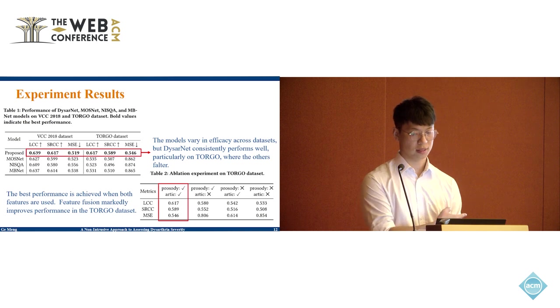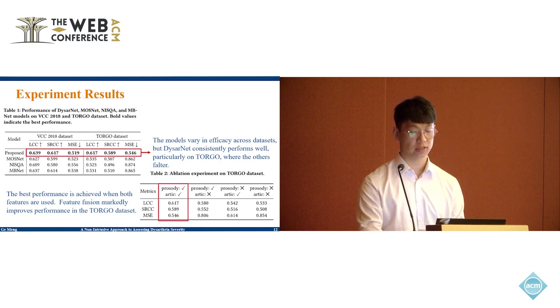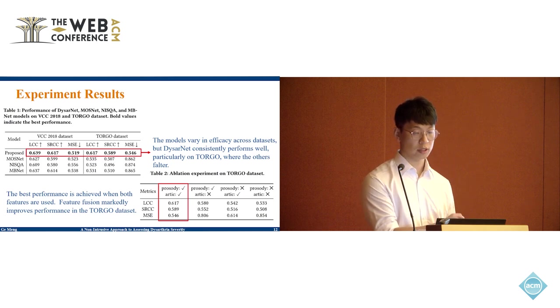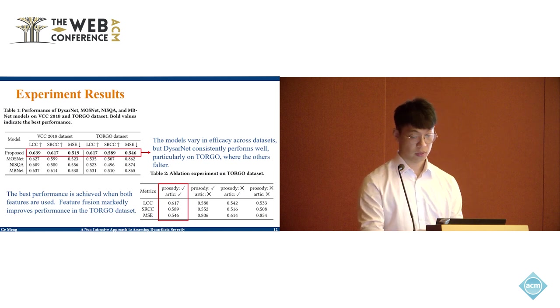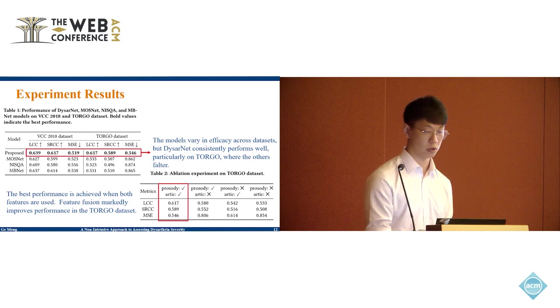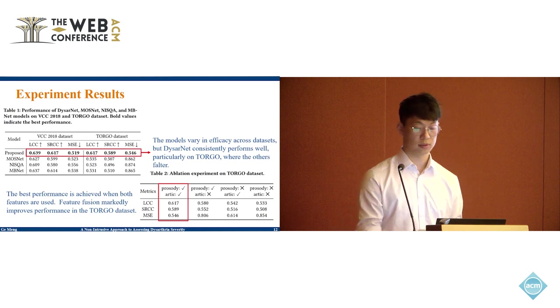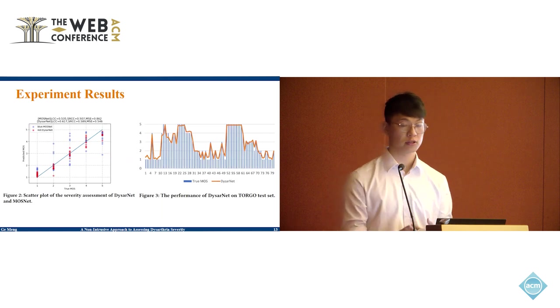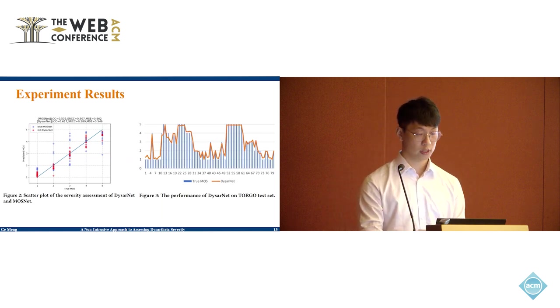It highlights how different features influence the assessment metrics. It's interesting to see that including features or prosody information really helps improve the correlation with the actual values. Meanwhile, focusing on the articulatory features seems to help reduce the prediction errors while assessing speech with similar severity levels. This kind of insight is valuable because it points out what elements are key for future assessment.